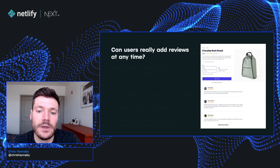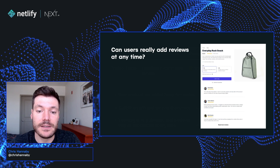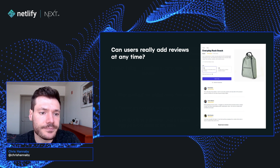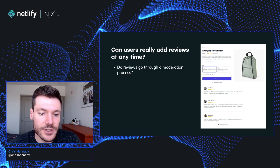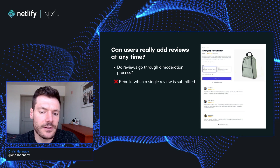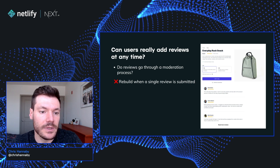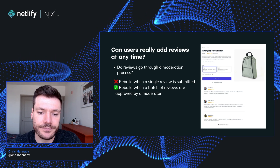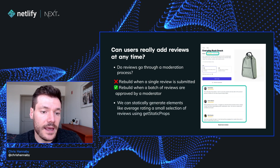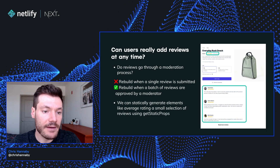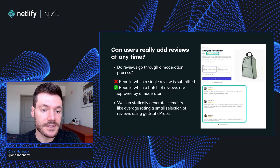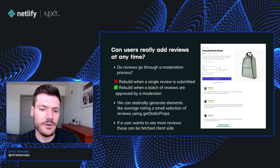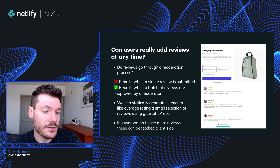First, let's look at how we handle the reviews. It's always worth questioning how dynamic our data sources really are. If we think about reviews, they typically go through a moderation process, and this kind of acts as a natural throttle on this user-generated content. Yes, a user can submit a review at any time, but we actually only want to publish moderated reviews — we might do this in a batch when moderators submit a batch of reviews. We can use that data to generate certain elements like an average rating, or maybe embedding some top reviews using getStaticProps as part of our static generation process. If we have lots of reviews and users want to see more, we could fetch those client-side.